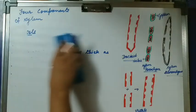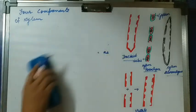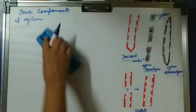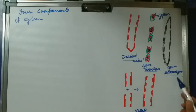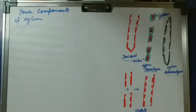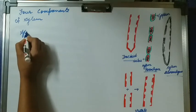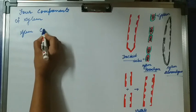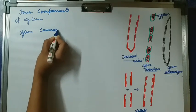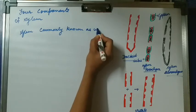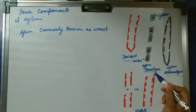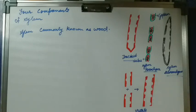The third element is xylem parenchyma, also known as wood parenchyma, because xylem is commonly known as wood. Similarly, xylem sclerenchyma can be called wood sclerenchyma.